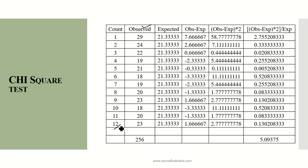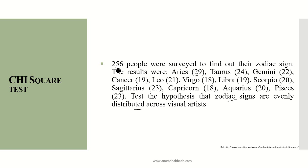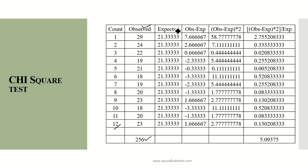We need to find the total of observations, which comes to 256. If the total is not given in the question, we add them up. What is expected? Expected is calculated as the total of observed divided by the number of observations, so 256 divided by 12, which gives us 21.3333.